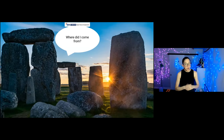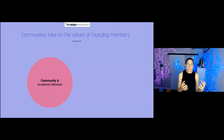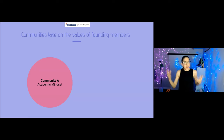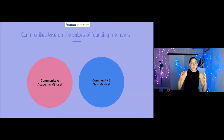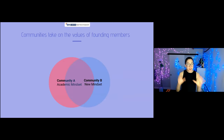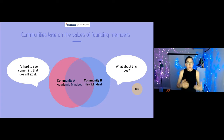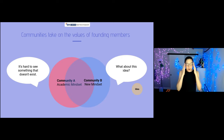When you're doing this, you might start to ask where did my values come from, and where did the values of this culture come from? I noticed something really interesting: communities tend to take on the values of their founding members, sort of like graph inheritance. Imagine community A with an academic mindset decides to create community B — do you think community B is going to be drastically different? Community B is going to look a lot like A, because it inherits the values of the founding members. The longer a community has been around, the harder it is to change their values. But if you engage early on with a new idea, they'll be more likely to consider it.